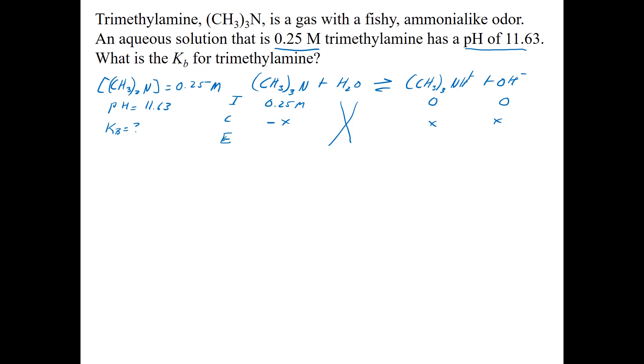Since you are not given Kb, you have to be able to find one of the equilibriums. So in the Ka problems, we found hydronium, and in this one, we're going to find the hydroxide. And we're going to do so from pH.